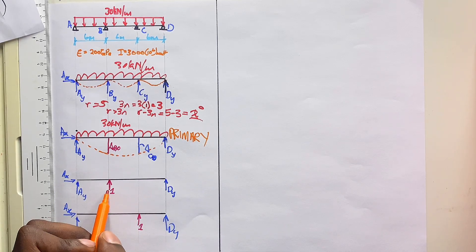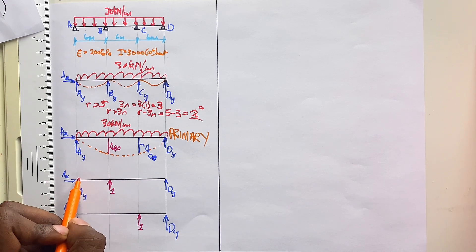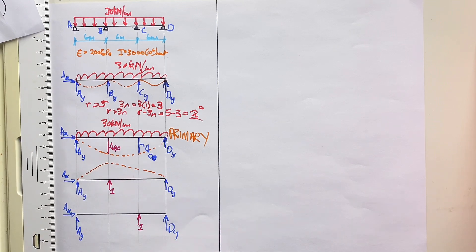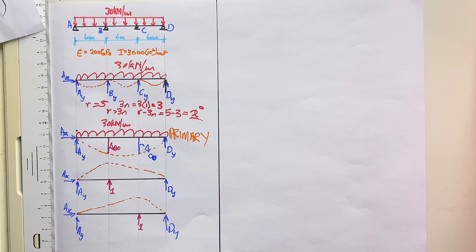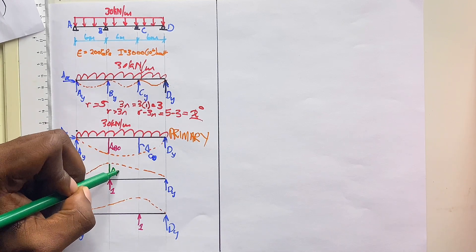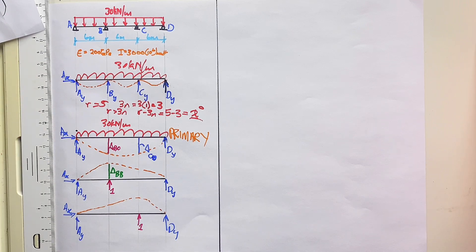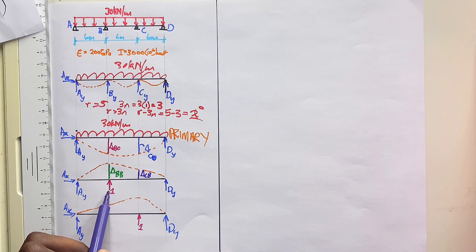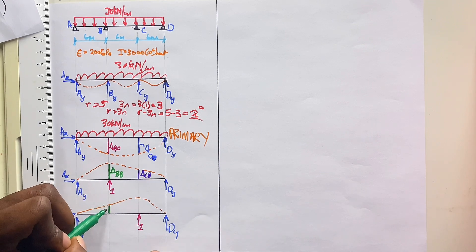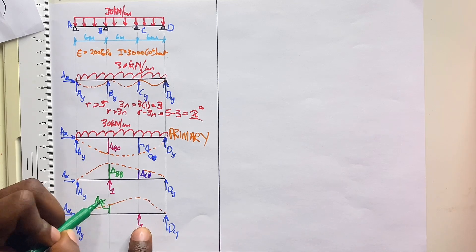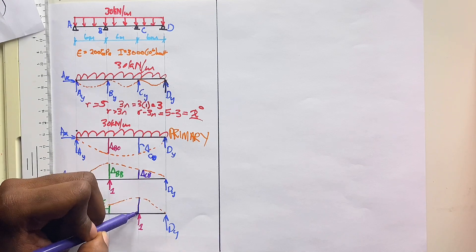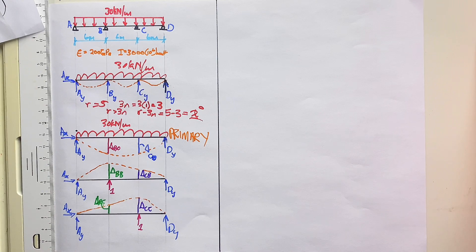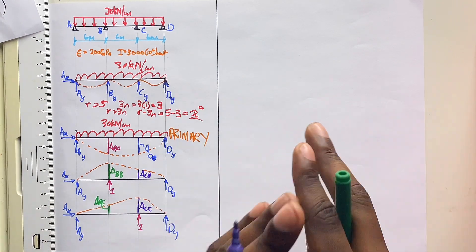Let's see how the beam deflects with a unit load. With a unit load at B, the beam deflects in a certain shape — at B there is deflection δ_bb, and at C there is deflection δ_cb, because the load is at B. With a unit load at C, the beam deflects differently — at B there is deflection δ_bc, and at C there is deflection δ_cc because of the force at C. That's how you draw your free body diagrams. Now I can start computing the compatibility equations.